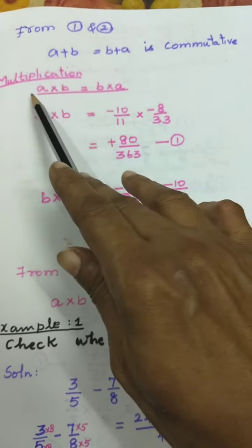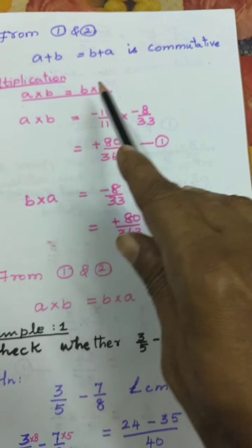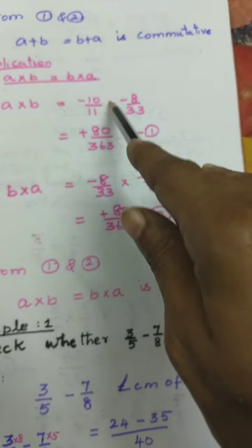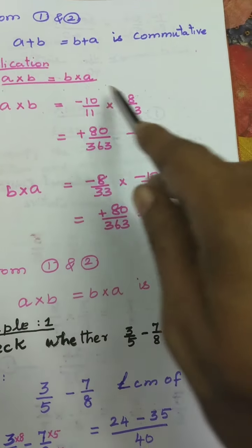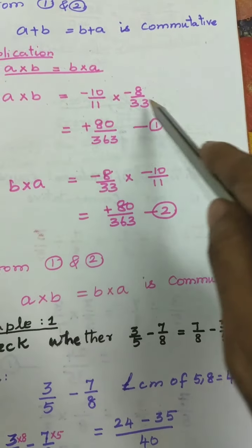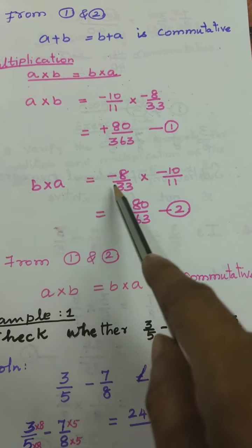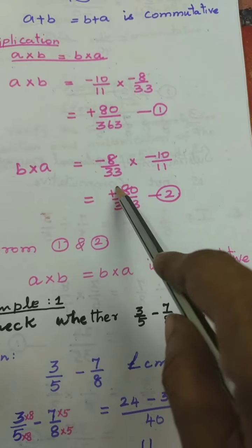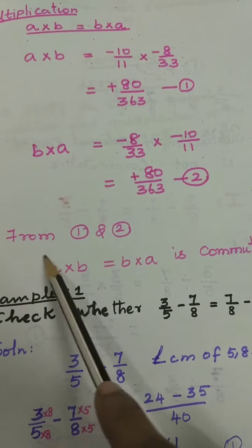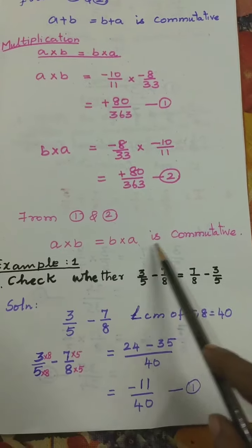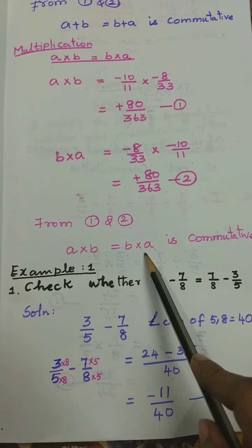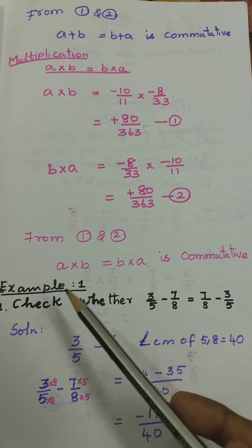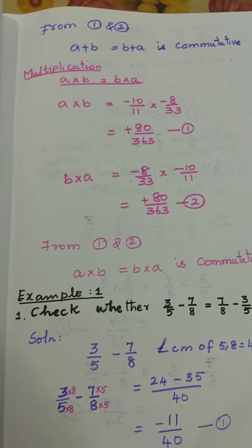Now for multiplication: A into B equals minus 10 by 11 into minus 8 by 33. No need to find LCM for multiplication. Minus into minus becomes plus, so A into B equals 80 by 363. Then B into A equals minus 8 by 33 into minus 10 by 11, which also equals 80 by 363. From equations 1 and 2, A into B is equal to B into A, so multiplication is commutative. We have proved that addition and multiplication of the rational numbers minus 10 by 11 and minus 8 by 33 satisfy commutative property.